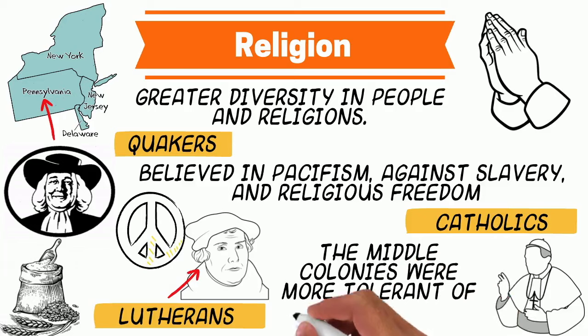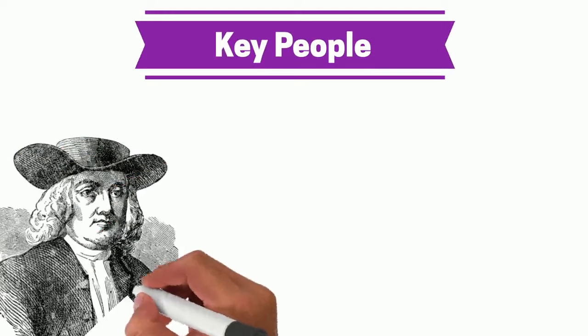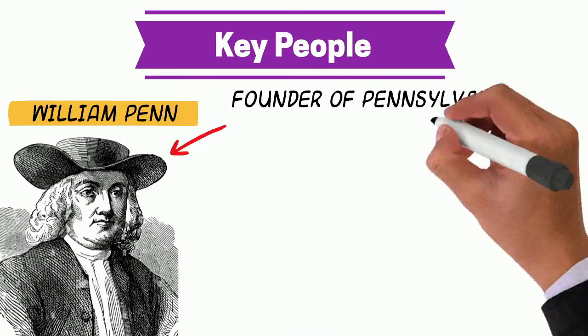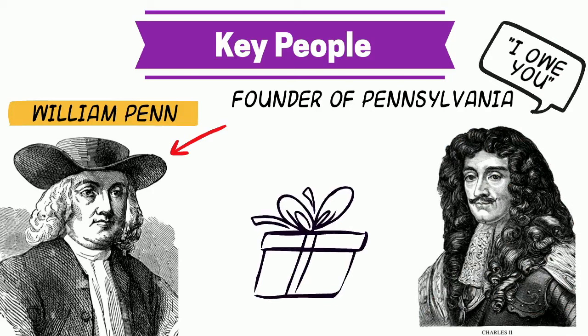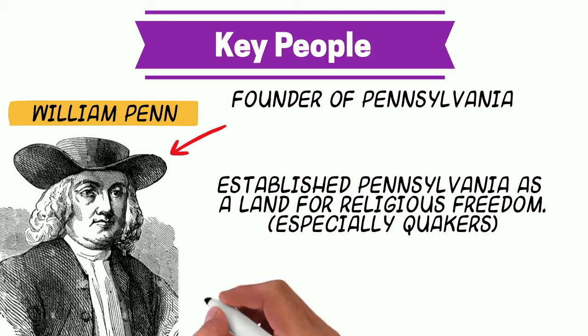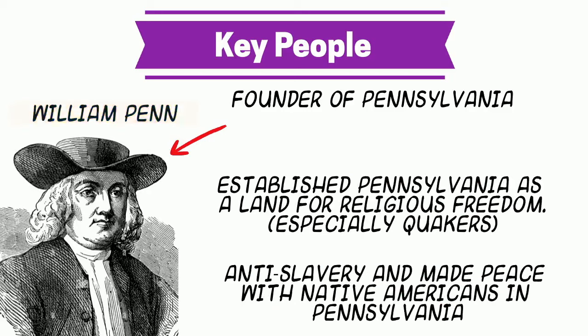A key person from this region is William Penn, the founder of the colony of Pennsylvania, who personally established the city of Philadelphia. Back in England, King Charles II owed his father a lot of debt, and so King Charles II gifted this land to William Penn for him to use for whatever purposes he wanted. Having left the Church of England and become a Quaker himself, Penn established Pennsylvania as a land for religious freedom. William Penn was also a pacifist, and he was big into anti-slavery and making peaceful alliances with the Native Americans in Pennsylvania.